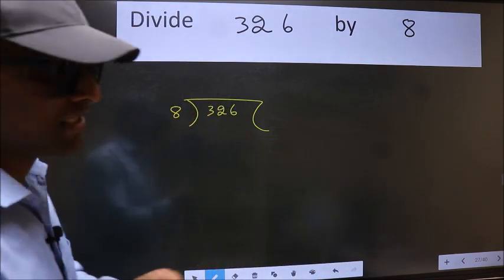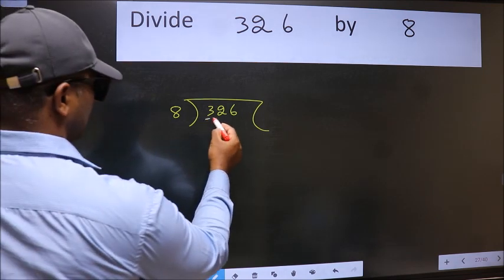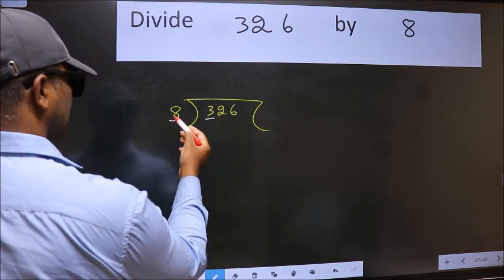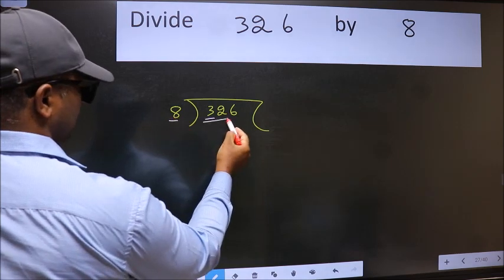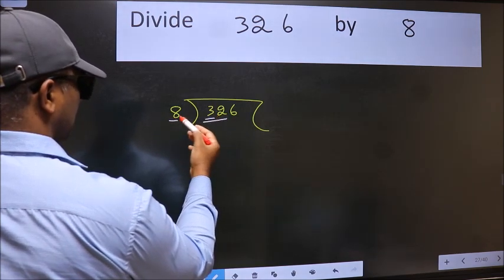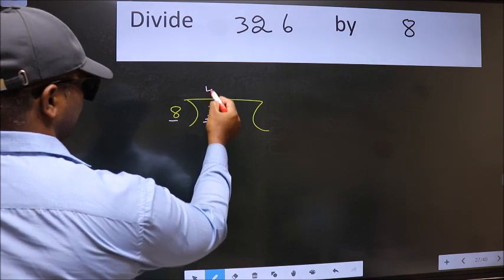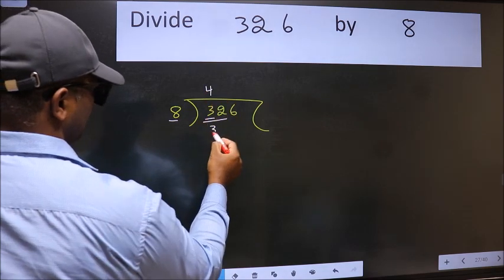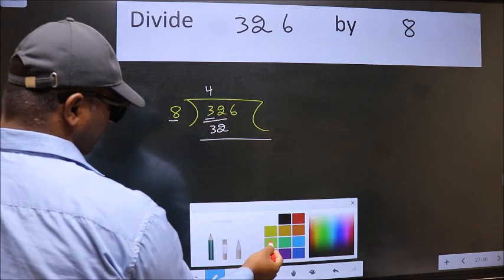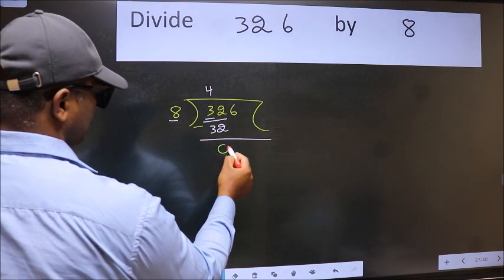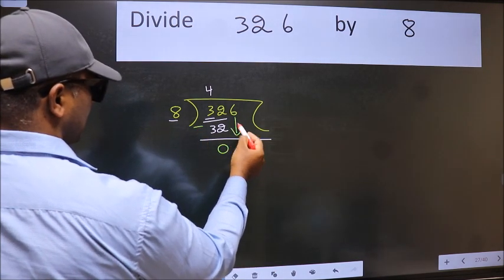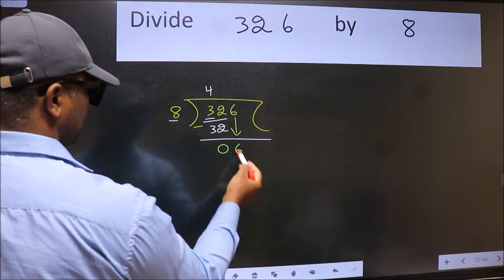Next, here we have 3 and here 8. 3 is smaller than 8, so take 2 numbers: 32. When do we get 32 in the 8 table? 8 fours are 32. Now we should subtract — we get 0. After this, bring down the beside number, so 6 comes down.